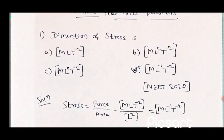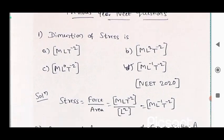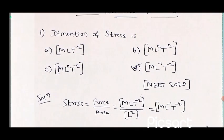For finding the dimension, we have the formula of stress, that is force by area. First we note down the dimension of force. Force formula is mass into acceleration. Mass dimension is M and acceleration dimension is LT to the power minus 2. That gives the force dimension. Area dimension is L square, and it is in the denominator. After interchanging the dimension of L square to the numerator, we will get ML to the power minus 1 T to the power minus 2.